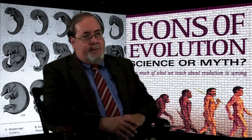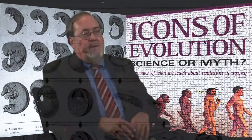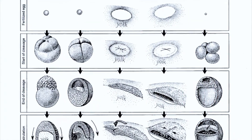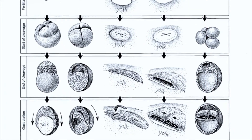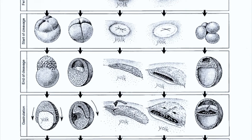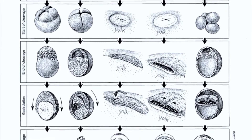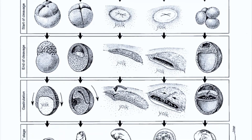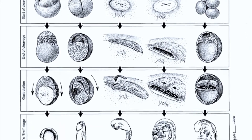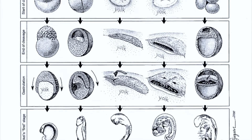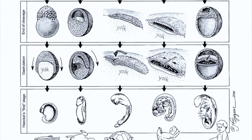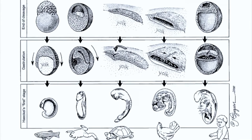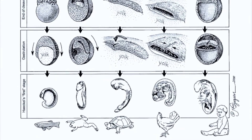The drawings show, typically in the first row, embryos that look almost identical. These are embryos supposedly of fish, salamander, turtle, chicken, and various mammals. And then as they develop, these embryos become more and more different until we see the actual adult fish, salamander, turtle, and so on.